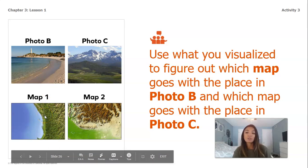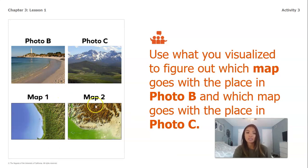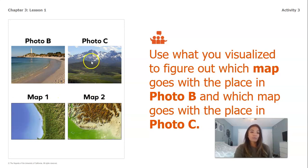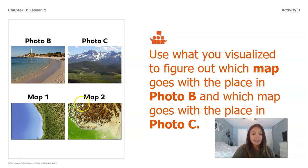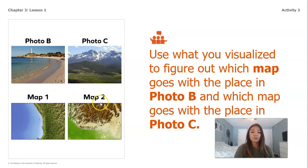Let me double check that photo C and map two match up. Photo C, I'm looking for highland because I can see those mountains in the background — it's actually very highland. If I look at map two, I can see a lot of very highland indicated by the brown shading. So photo C matches up with map two.